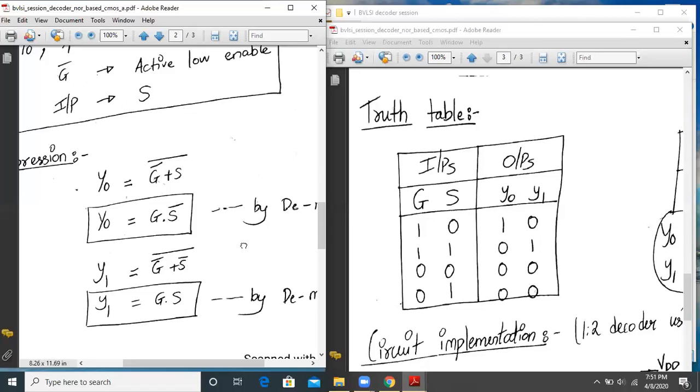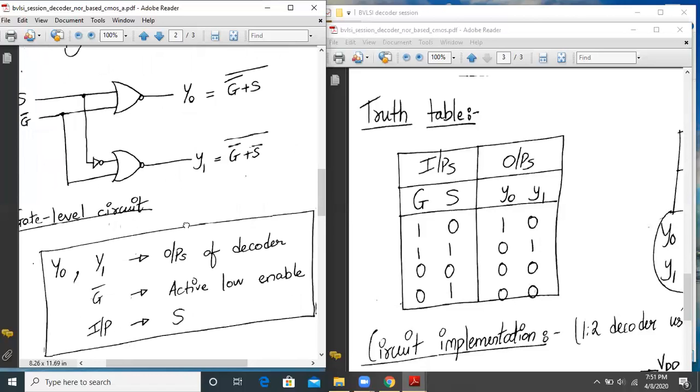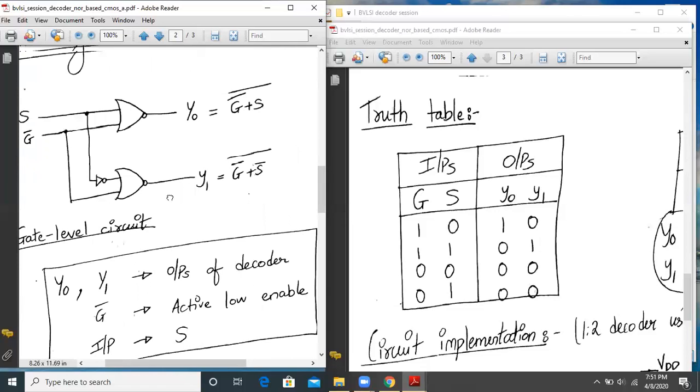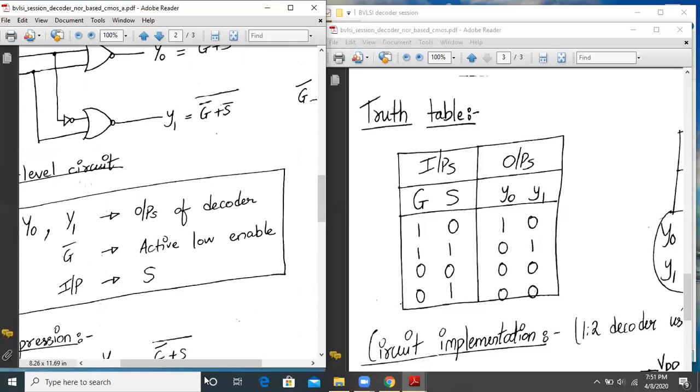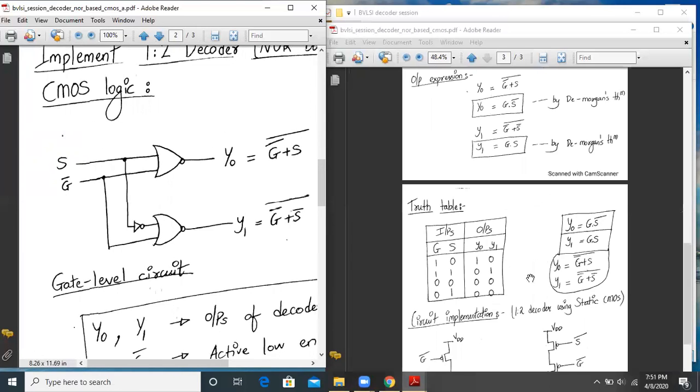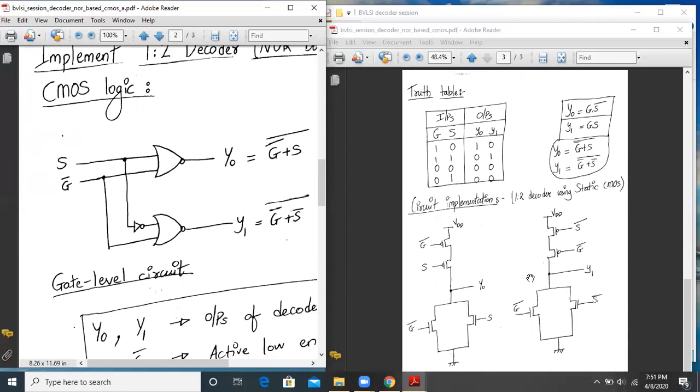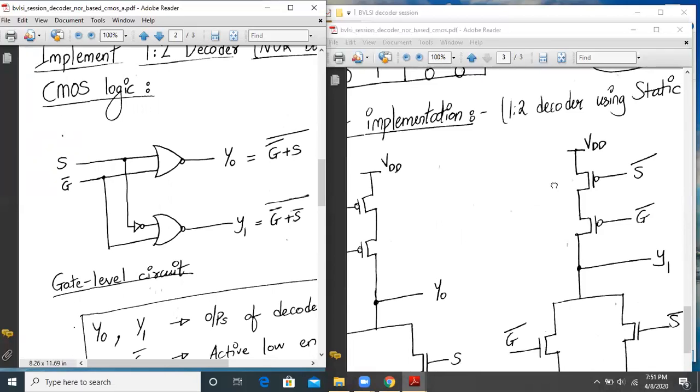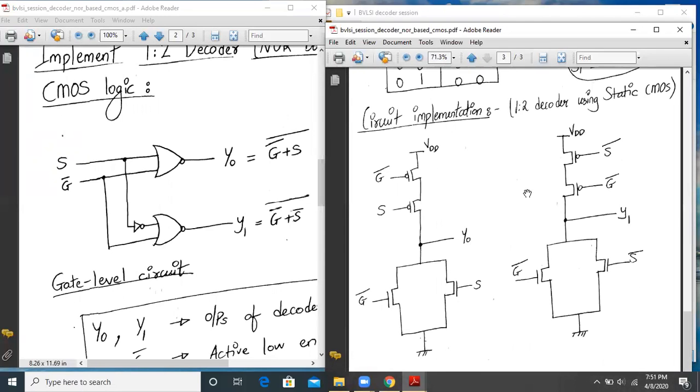Now we have to implement this 1:2 decoder. We have to do the transistor level implementation using CMOS static style. So let us go ahead and check our circuit. This is my CMOS implementation of the same. As you can see from the output expressions, it is G-bar plus S the whole bar. So basically, in my pull-down network, I have two NMOS transistors connected in parallel. And the opposite will be true for PMOS transistors, which will be connected in series in the pull-up network.